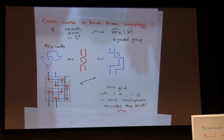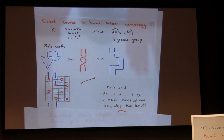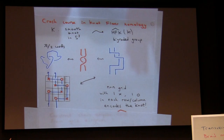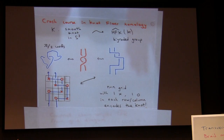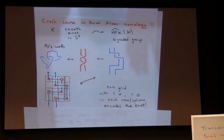You put the braid in a square position, then encode it on a grid diagram: an n×n grid with one X and one O in each row and each column. This encodes the knot. You connect X's to O's vertically and horizontally; horizontal strands go over vertical strands. If O is above X, you go into the grid; if X is above O, you go out. So any smooth knot can be encoded by a grid diagram.